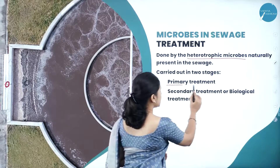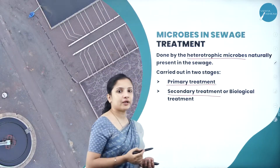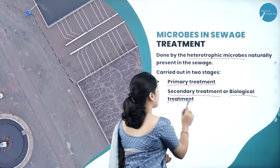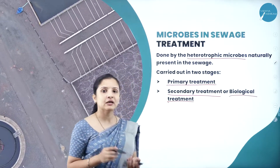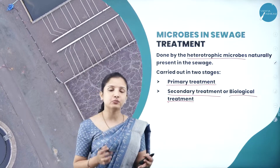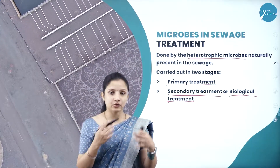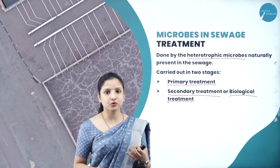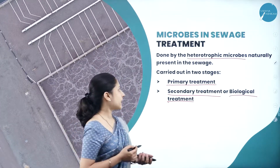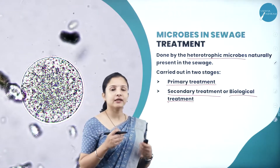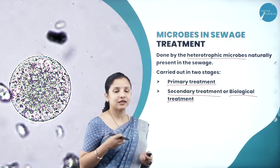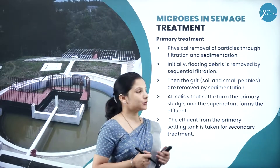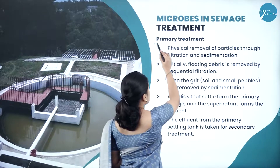By using such microbes, the sewage can be treated in two stages: one is the primary treatment and the other is the secondary treatment, also called the biological treatment — because it is in the secondary treatment that we add microbes in order to increase the purification of the sewage matter. In the primary treatment, it is actually a manual method.